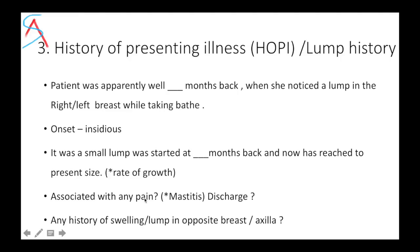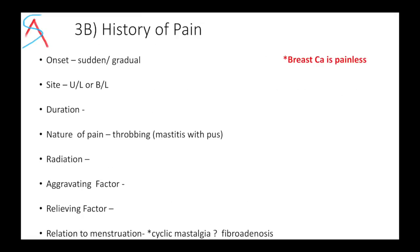Generally breast carcinoma lumps won't be painful, but if it is due to mastitis or any abscess then it would be painful. Ask about history of any swelling in the opposite breast or opposite axilla. If the patient gives a history of pain, elaborate on it: what is the onset, is it unilateral or bilateral, what is the duration, what is the nature — generally it would be a throbbing type of pain if it is mastitis with pus — and whether it is radiating, aggravating, or has relieving factors related to menstruation.